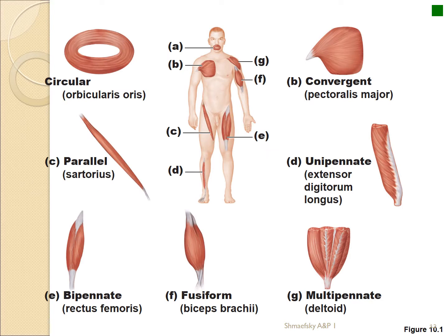A circular muscle has fascicles that go all the way around, and sometimes these fascicles look like two sets connecting in the middle to a skin attachment point. These are called orbicularis muscles — orbicularis meaning circular. An example is the orbicularis oris — oris meaning mouth — which opens and closes your lips.